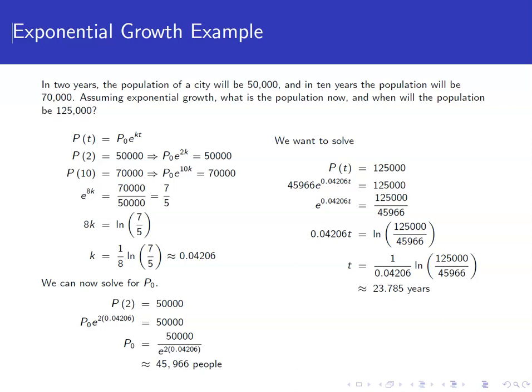This problem asks us, assuming exponential growth, what's the population now, and when will the population be 125,000? The exponential growth equation is P(t) = P₀e^(kt).